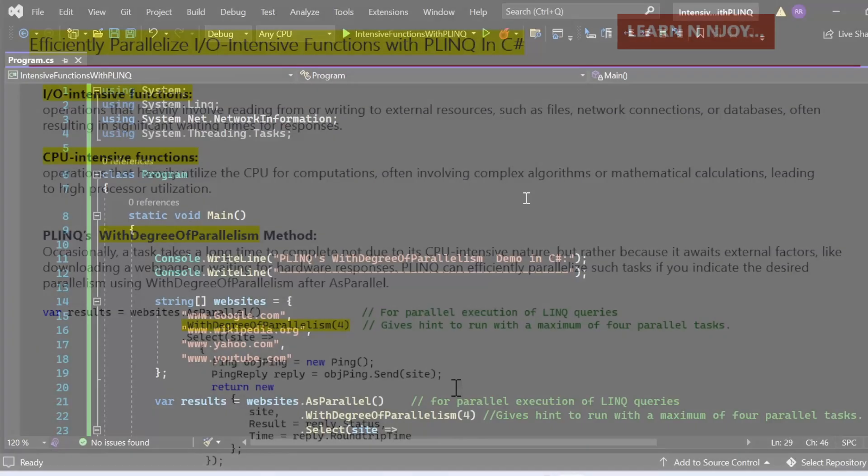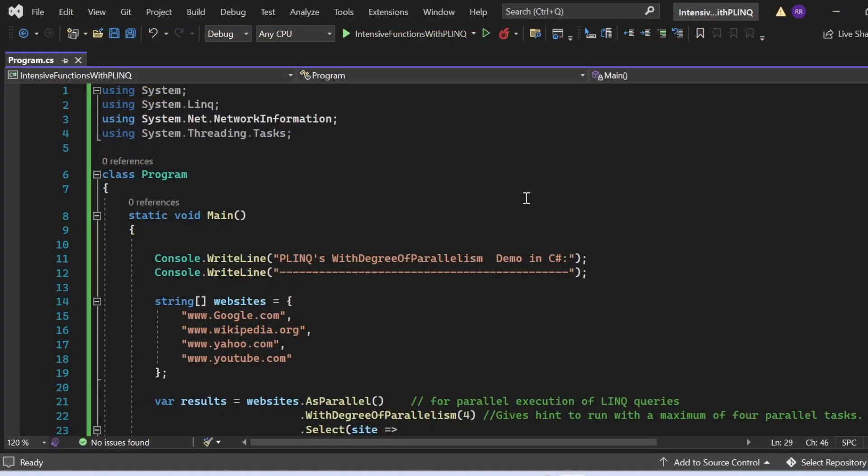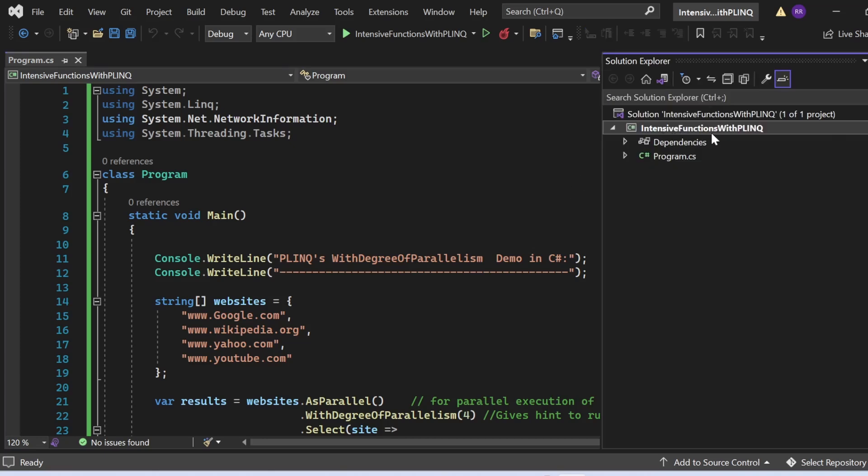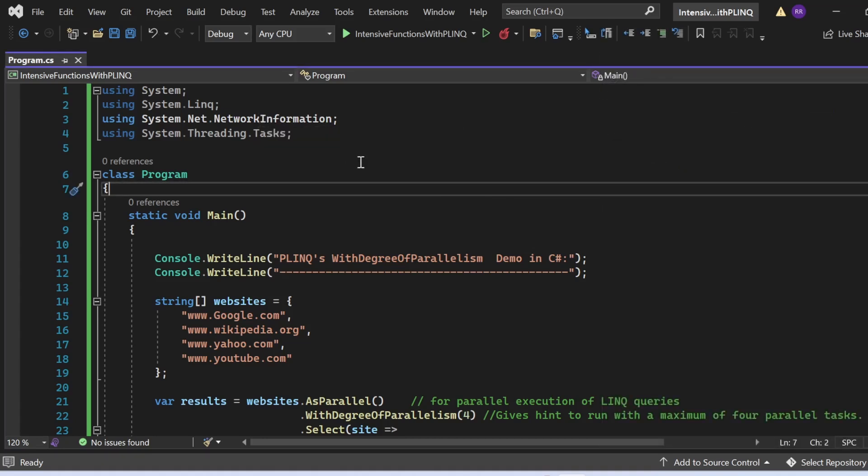So here we are in Visual Studio. We are going to see a C# program that demonstrates how to use PLINQ to efficiently ping multiple websites simultaneously with the help of WithDegreeOfParallelism method. Here, I have created one console application named IO Intensive Function With PLINQ that has Program.cs.